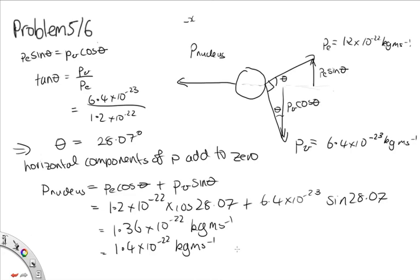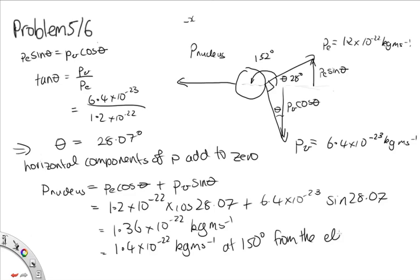For the direction, if we give the angle between the electron and the nucleus, theta is 28 degrees, so the angle between them is 180 minus 28 equals 152 degrees, which rounds to 150 degrees to two significant figures from the electron.